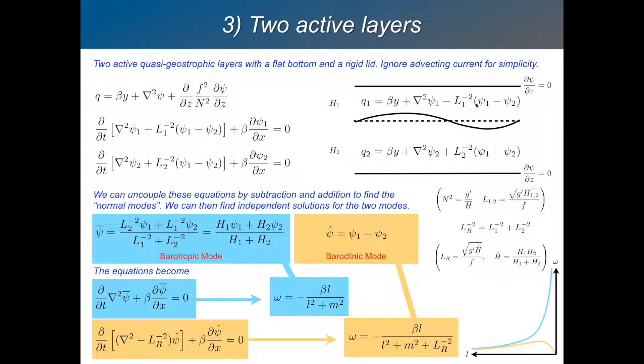So Q1 depends on both layers and so does Q2. We have two coupled equations for the conservation of potential vorticity. Now I've dropped the background flow in this example just to keep things simple. And the problem now is to solve these two equations. We can't solve these two equations independently because they're coupled. So we need to decouple them.